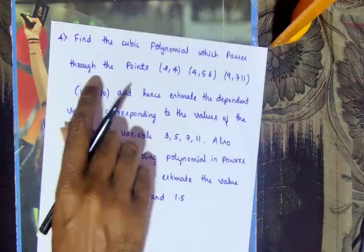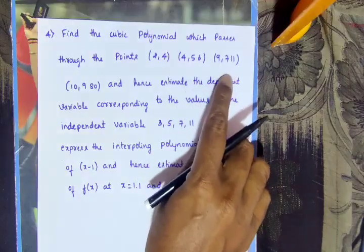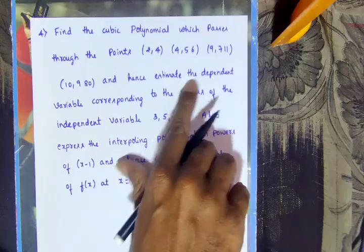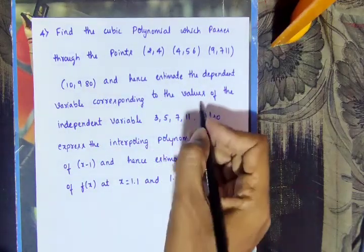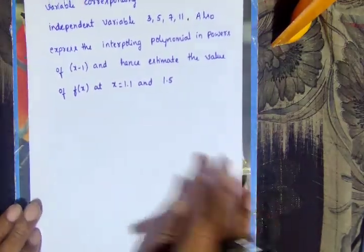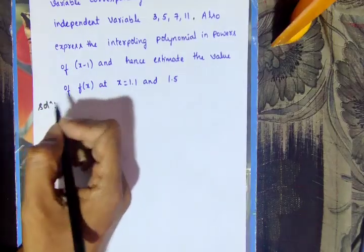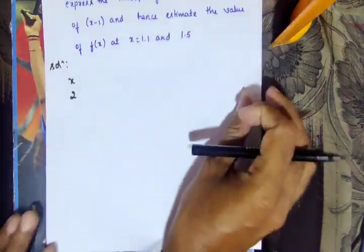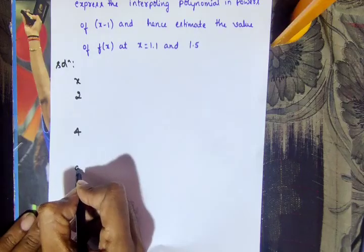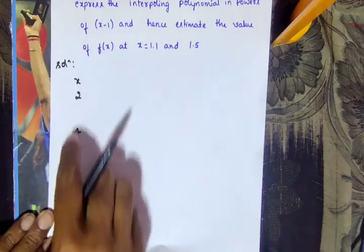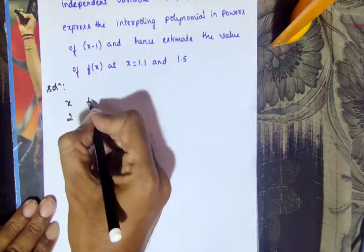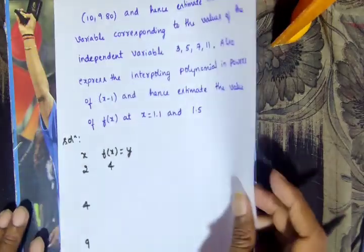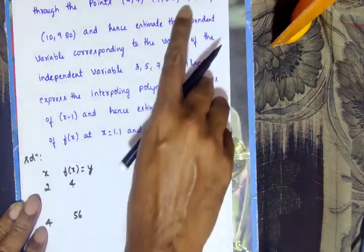Find the cubic polynomial which passes through the points (2,4), (4,56), (9,711), (10,980). Hence estimate the dependent variable corresponding to the values of the independent variable. The solution: x values are 2, 4, 9, 10, and the corresponding y values are f(x): f(2)=4, f(4)=56, f(9)=711.